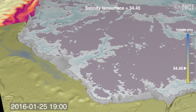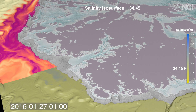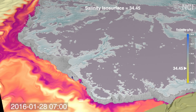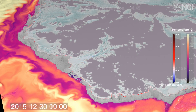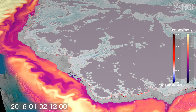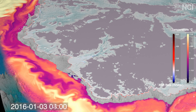Here, we colour the constant salinity isosurface with a temperature scale, to show the thermal gradients. We also remove the surface, which is far from the coastline, for clarity.